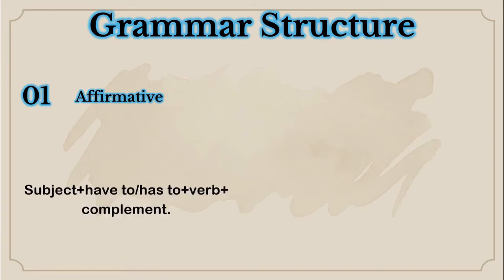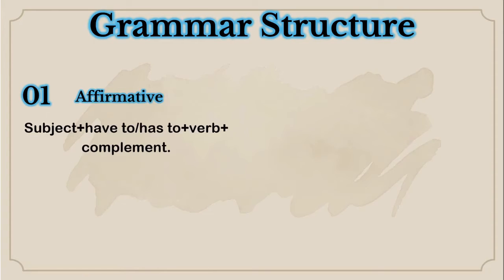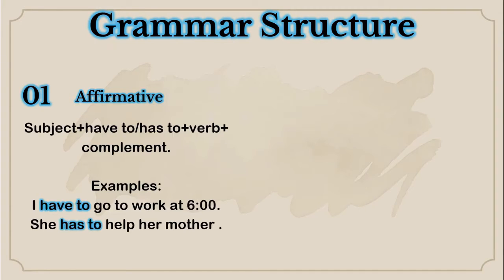So, grammar structure. First, you have the affirmative form: subject plus have to, or has to if it is third person singular, plus the verb plus the complement. Examples: I have to go to work at six. She has to help her mother. That is not exactly an obligation, but you have to do that action — it is like a responsibility.